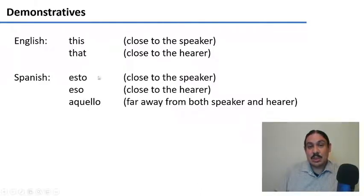Esto is used for things closer to the speaker. Eso is used for things close to the hearer or far away from the speaker. And aquello is used for things that are far away from both the speaker and the hearer. That might be in some third point of space in time.